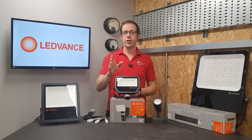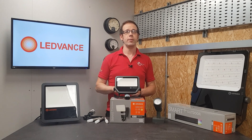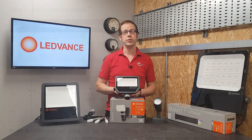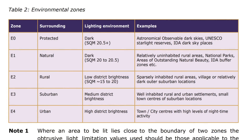The document defines five different environmental zones in Table 2, from E0 to E4. E0 is the most sensitive to light pollution — areas where astronomical observations are carried out or areas defined by UNESCO as starlight reserves — and E4 being urban areas like towns and cities where lots of nighttime activity takes place.